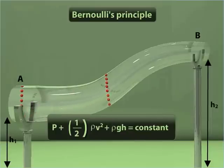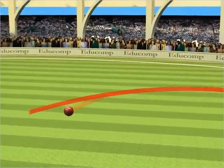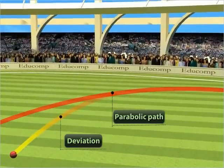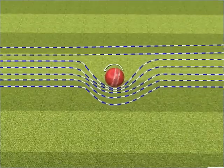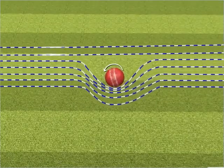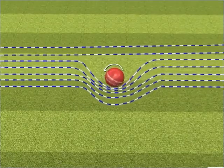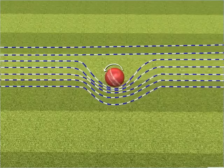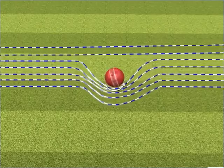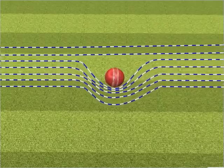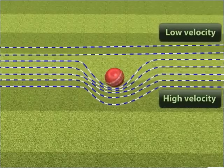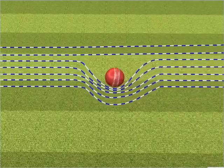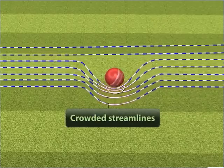Now that you've learnt about Bernoulli's Principle, let us try to answer why a spinning ball deviates from its parabolic path. As the spinning ball moves through the air, the direction of ball spin opposes the direction of airflow above the ball. Thus, the velocity of air below the ball is greater than that above it, and the streamlines get crowded below the ball.